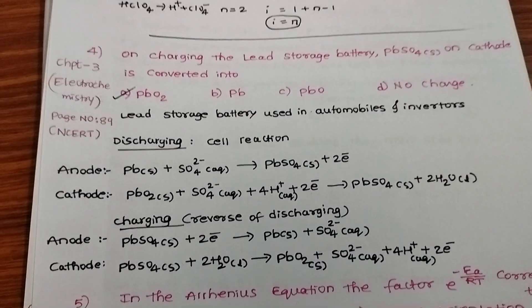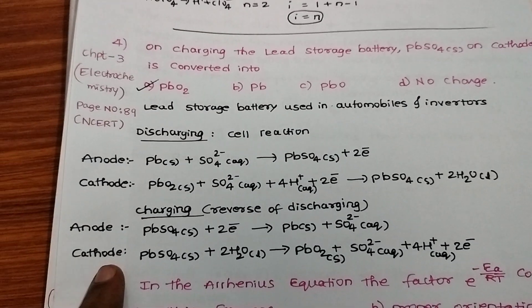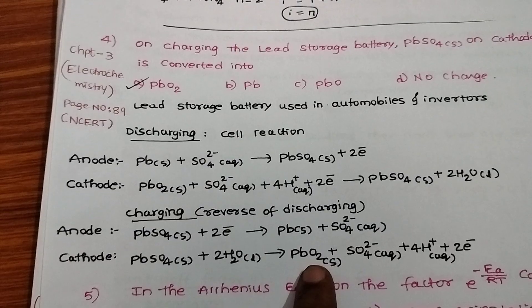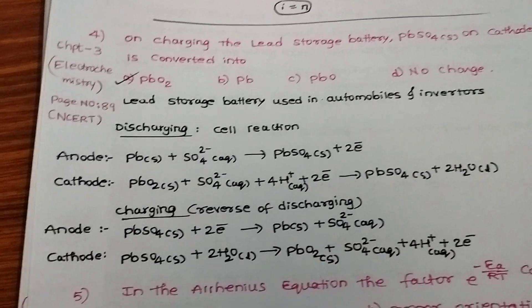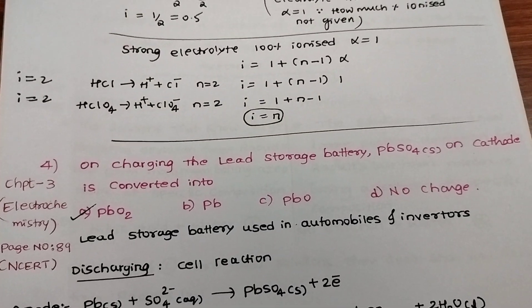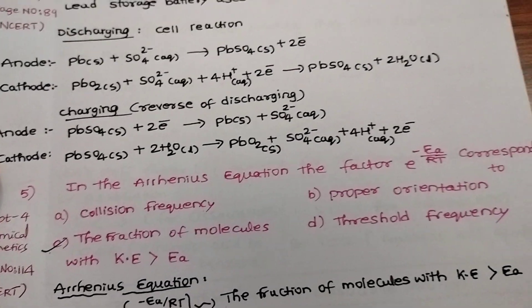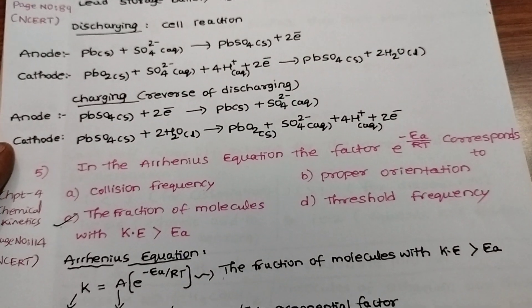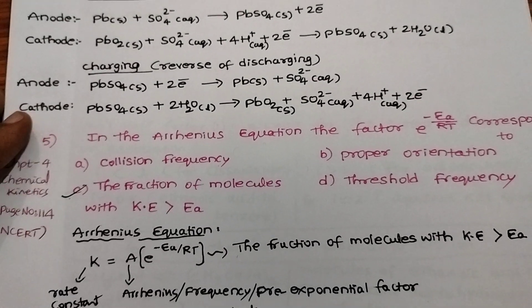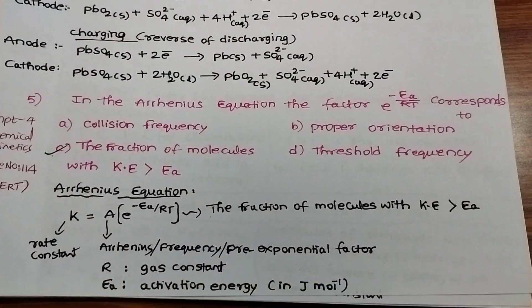We need to know what happens at cathode and anode during discharging and charging. They have asked for charging. At cathode, lead sulfate is reduced to lead oxide, PbO2. Fifth question: in the Arrhenius equation, the factor e raised to minus Ea by RT corresponds to?